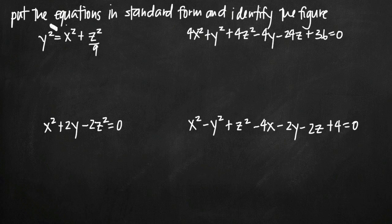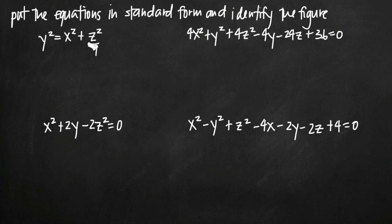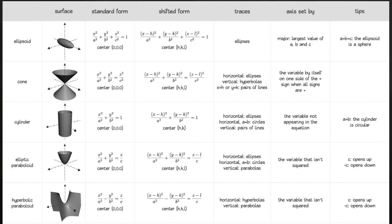For this equation, we have all three variables involved. All three signs are positive, but one of the variables is on its own, on a different side than the other two. I've created a chart that helps us with the standard forms for each of our quadric surfaces. Let's go take a look at that, keeping in mind what we've said about our first equation.